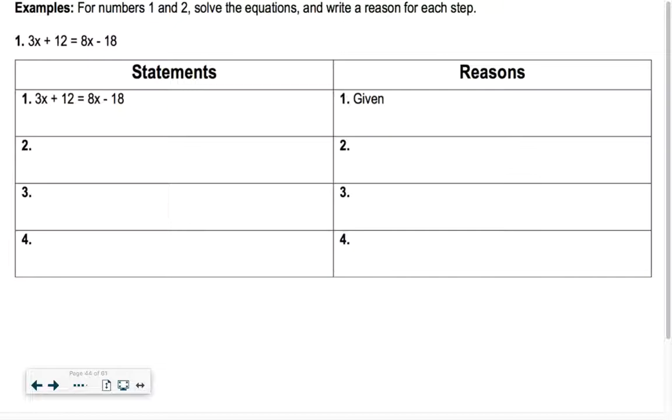So we were given the problem 3x plus 12 equals 8x minus 18. So what's the next step? What do we want to do to both sides? We can do anything. Yeah, so let's try to add 18, add 18. So if I add 18, add 18, I get 3x plus 30 equals 8x.